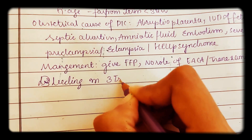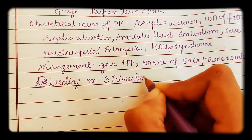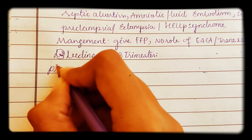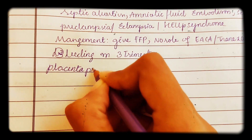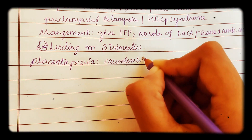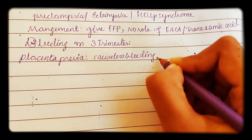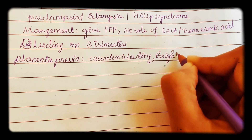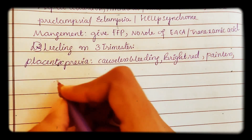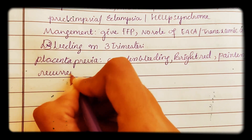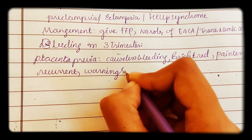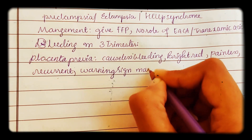Bleeding in the third trimester is divided into categories. In placenta previa, you have causeless bleeding that is bright red, painless, and recurrent. A warning sign may be present.